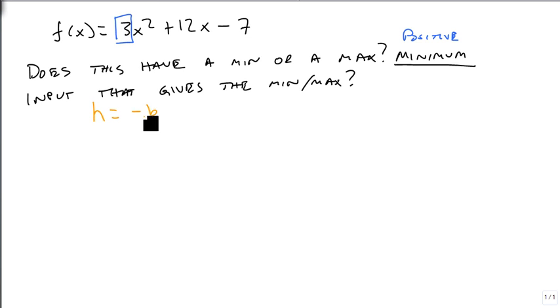h is -b over 2a. So it's -12 over 2 times 3, which is 6. This simplifies to -2. So the input that gives the minimum is -2.